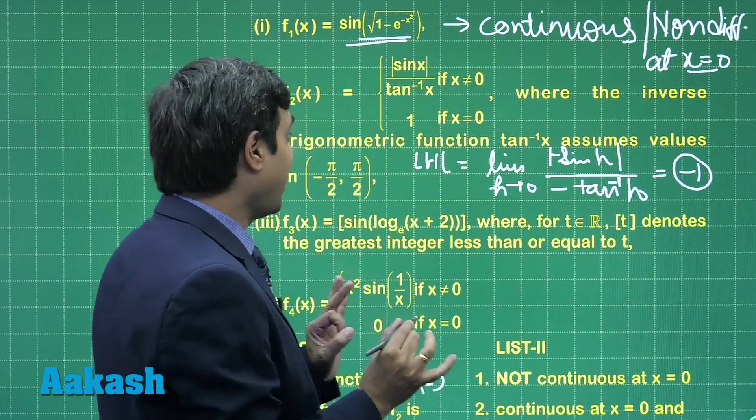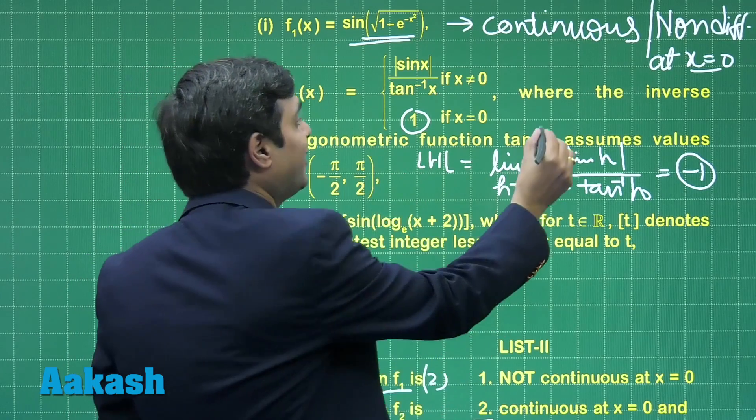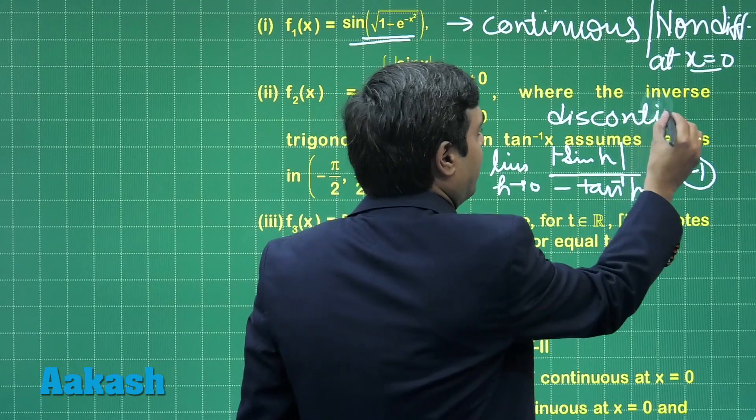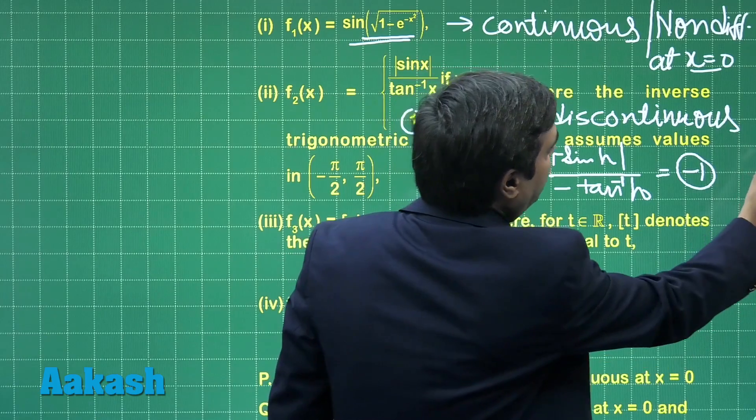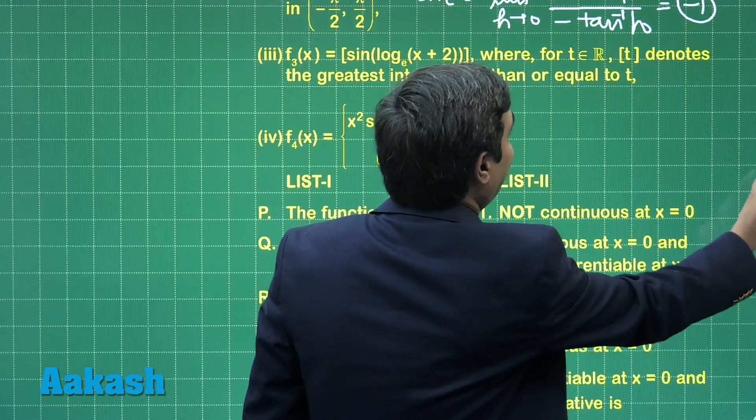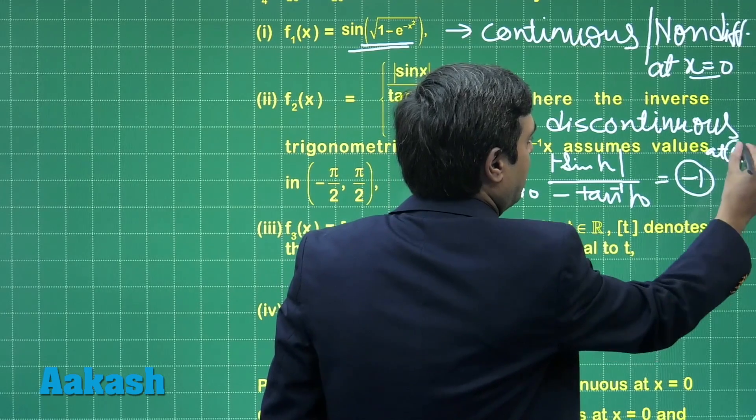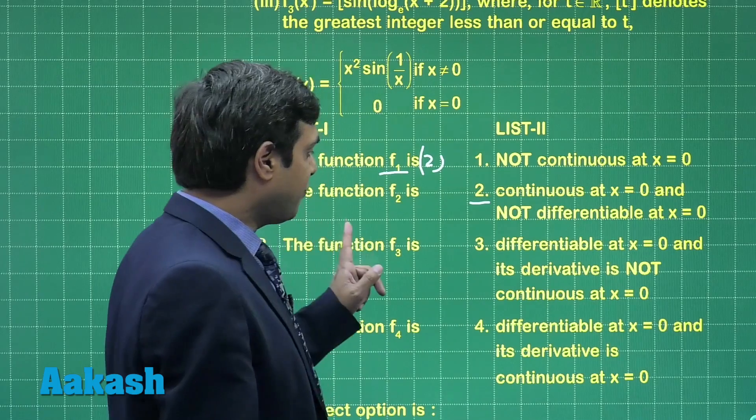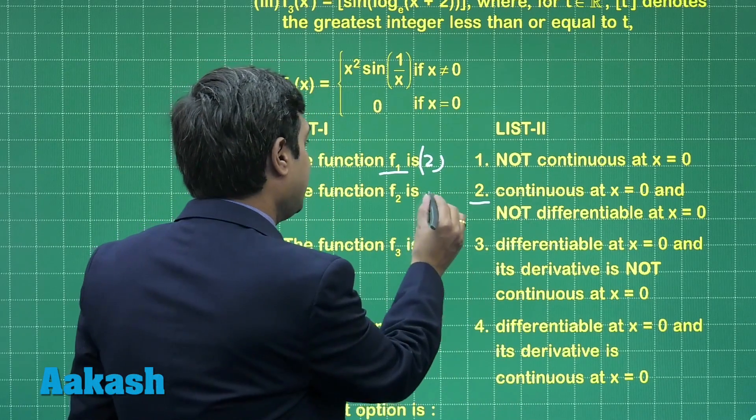LHL is -1 while the value of the function is 1. Clearly the function is discontinuous. This function is discontinuous at x equals 0. Let us check this one: function f2 is not continuous at x equals 0, means first.